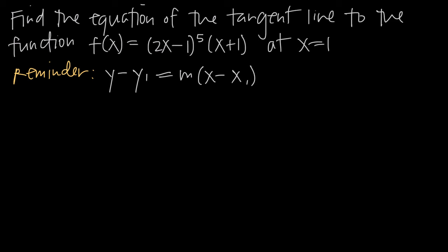In this video, we're talking about how to find the equation of a tangent line to a particular function at a specific point. In this particular problem, we have the function f equal to 2x minus 1 raised to the 5th power times the quantity x plus 1. We've been asked to find the equation of the tangent line to this function at the point x equals 1.